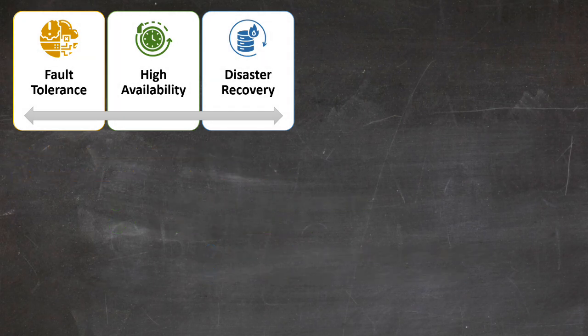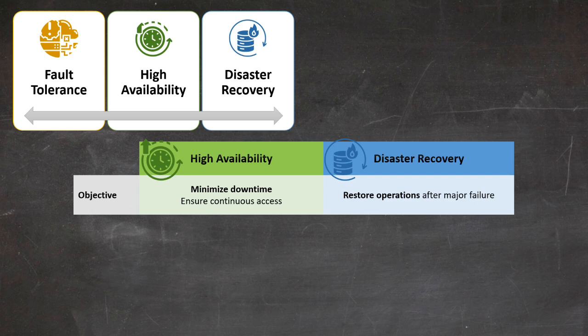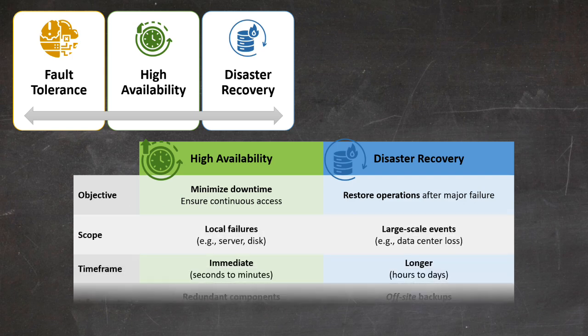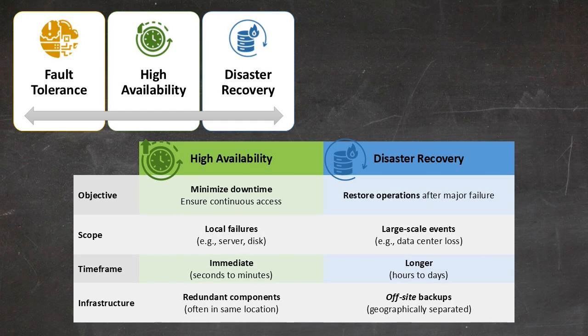To close on these key concepts, it's important to understand the difference between HA and DR. High availability is about keeping services running smoothly day-to-day, often handling smaller, localized issues. Disaster recovery deals with larger, catastrophic events that could potentially take down your entire system. Both are crucial components of a resilient microservices architecture.